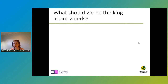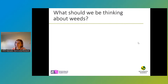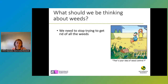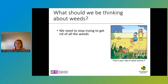Which brings me to the question of what should we be thinking about weeds? I'm going to make a big statement: I think what we really need to do is stop trying to get rid of all the weeds. Instead, we should be aiming for farms that are resilient to problematic weeds. We don't want huge populations of things like black grass, but we do want farms that can foster a diverse community of wild plants — a diverse community of weeds — and where the benefits we gain from these weeds outweigh any costs of having them there.